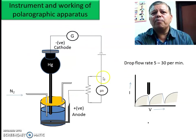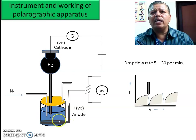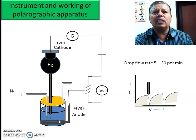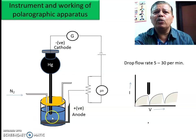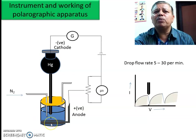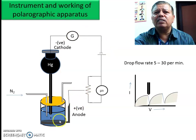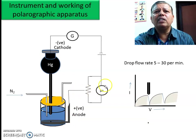In this apparatus, a beaker contains the solution. Whatever dissolved oxygen is present can be removed by continuously passing nitrogen gas through bubbling. The mercury drop continuously falls down and transfers to the pool. This drop acts as a negative electrode connected to the battery, while the positive electrode is connected to the mercury pool, and through this we measure the current as we supply the voltage.